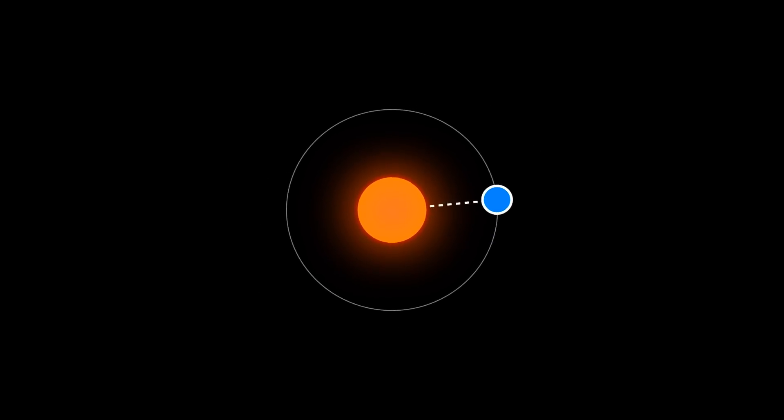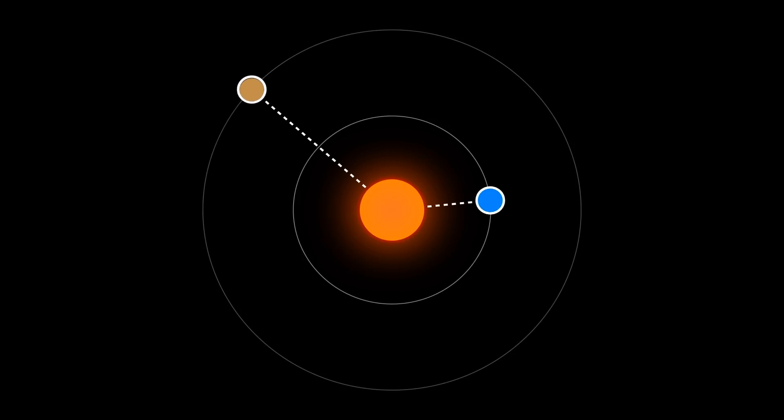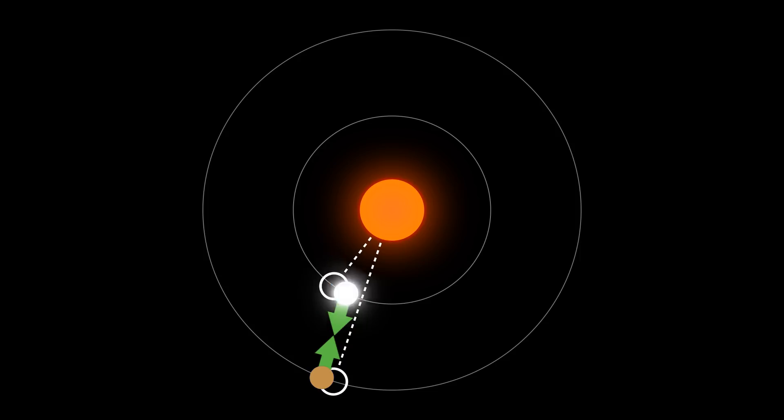However, adding another nearby planet messes this up a little bit. The mutual gravitational pull between the planets will speed them up or slow them down in different parts of their orbits. The timing is no longer perfect.